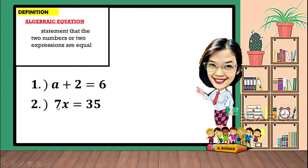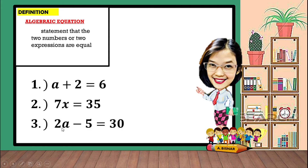Another: 7x is equal to 35. 7x is an expression and 35 is also an expression. These two expressions are equal, which means that when you find the value of x and multiply it by 7, the answer will be 35.